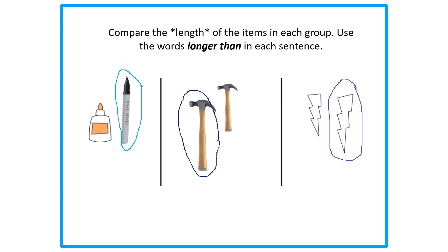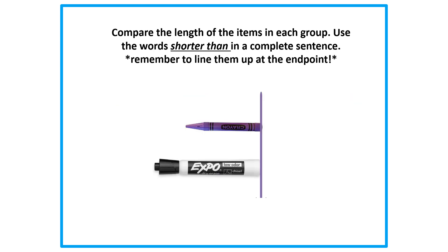If you agree, I would like for you to tell me why you agree. And if you disagree, I would also like to know why you disagree. Great critical thinking. Compare the length of the items in each group. I want you to use the words 'shorter than' in a complete sentence. Remember, make sure that your thinking caps are still on. We're using the words 'shorter than' to compare these two items in a complete sentence.